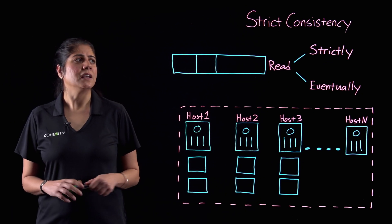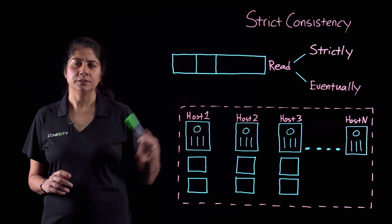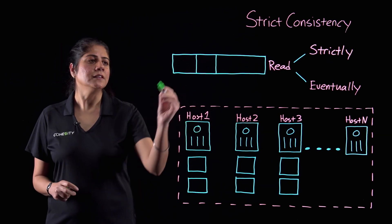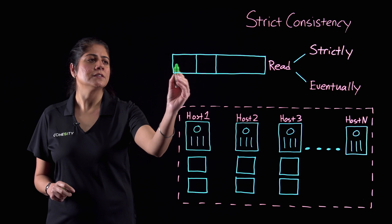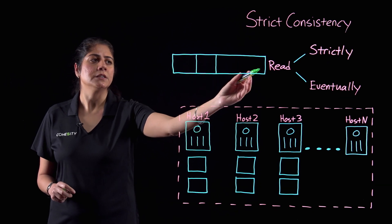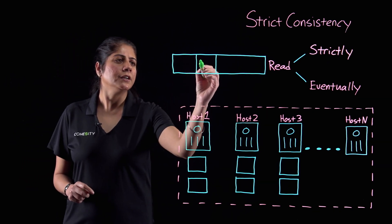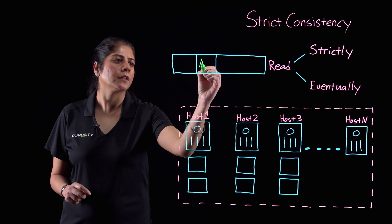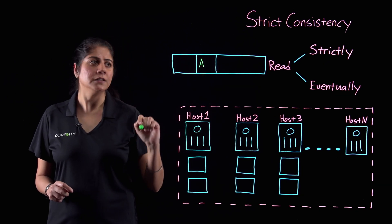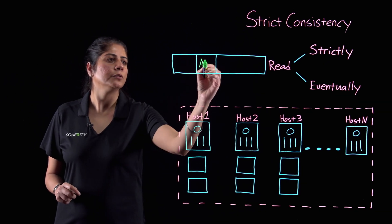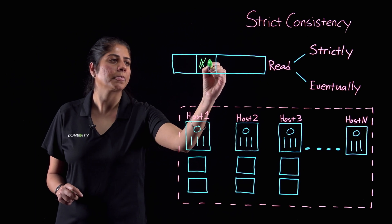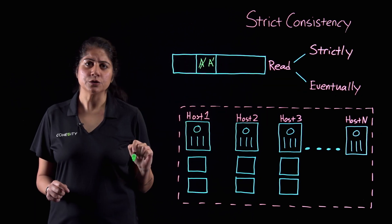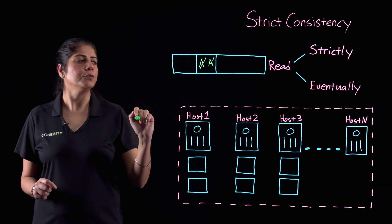To begin with, let us try to understand what exactly is strict consistency. Imagine you are writing to your storage device. This storage device is divided up into data segments, and this particular data segment has the value A in it. Now you want to update this value to the value A prime. In a strictly consistent storage system,